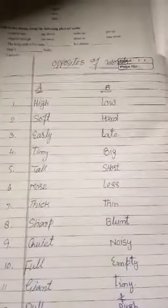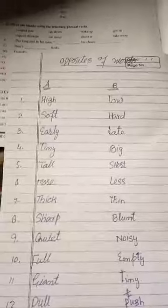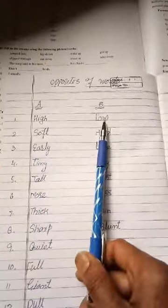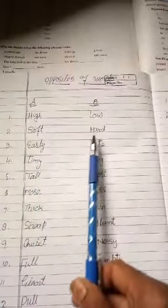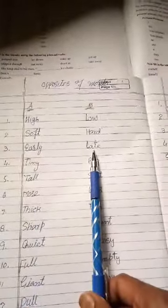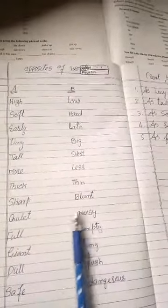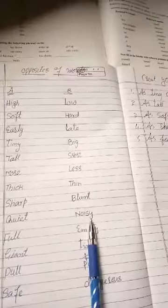Alaikum dear student scholars, today we are going to learn opposites of words. Some of the words are: high-low, soft-hard, early-late, tiny-big, tall-short, more-less, thick-thin, sharp-blunt, quiet-noisy, full-empty.